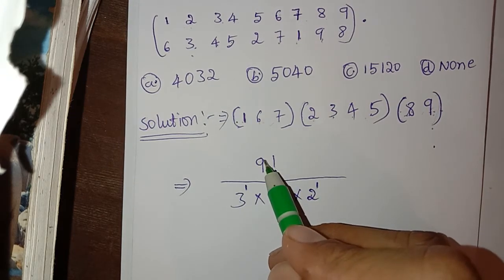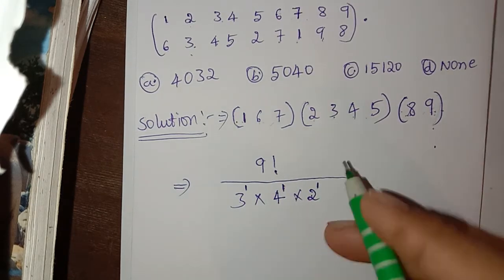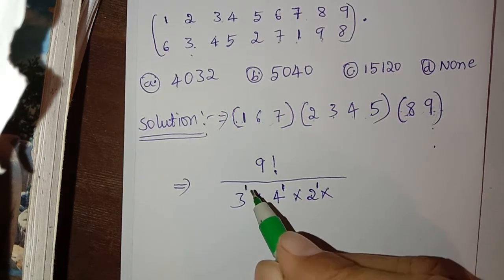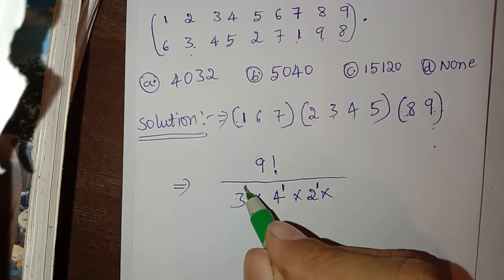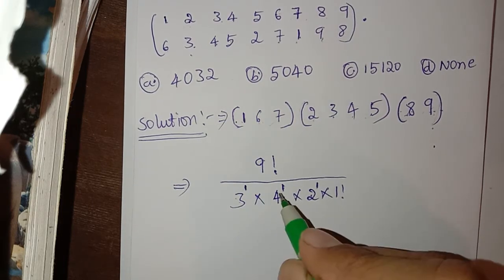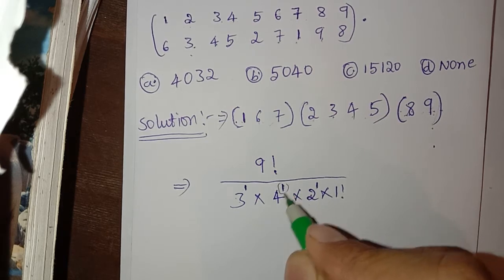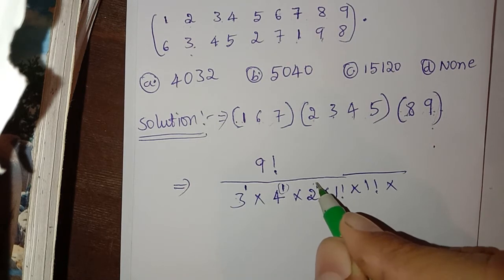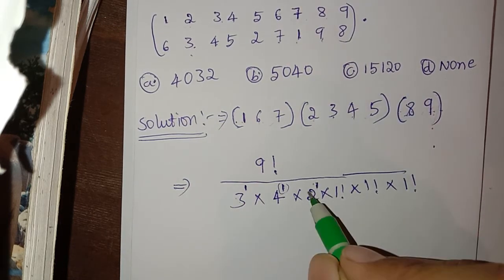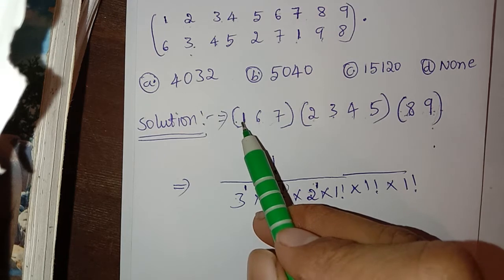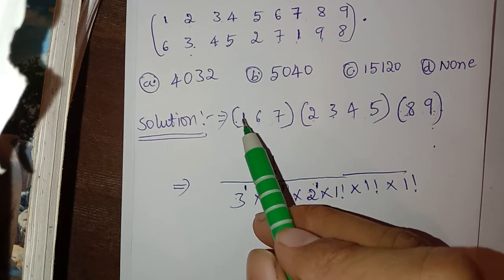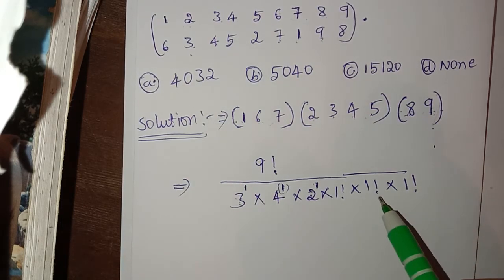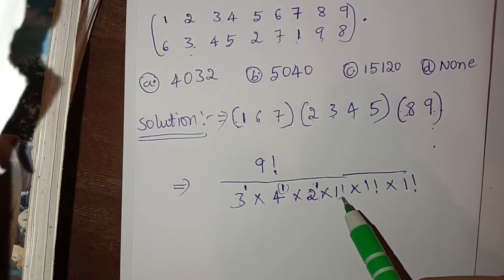By dividing nine factorial by this, we have: nine factorial divided by three raised to one, times one factorial, times four raised to one, times one factorial, times two raised to one, times one factorial. If there were two cycles having three elements then it would become three raised to two, and we would write two factorial.